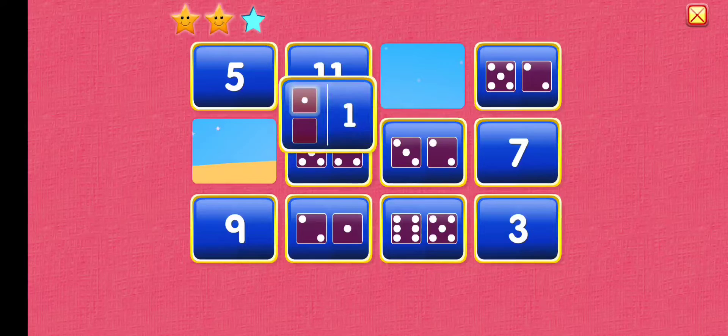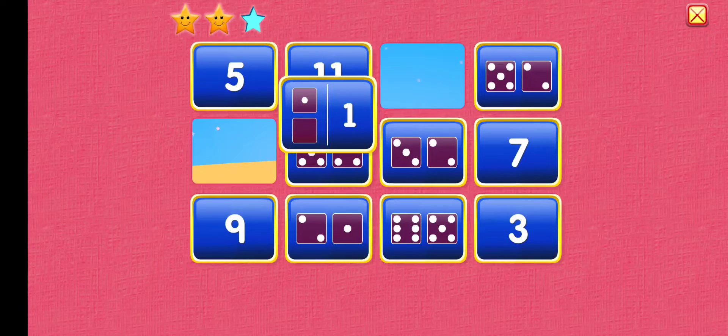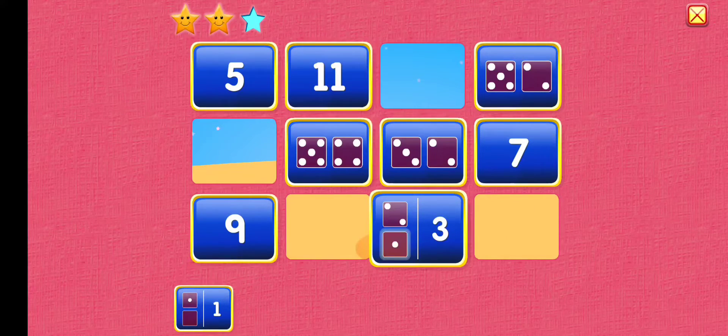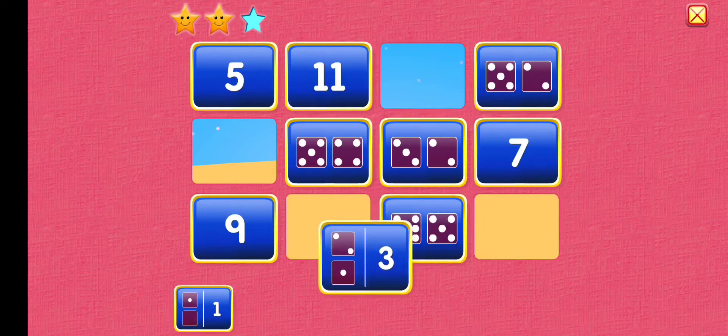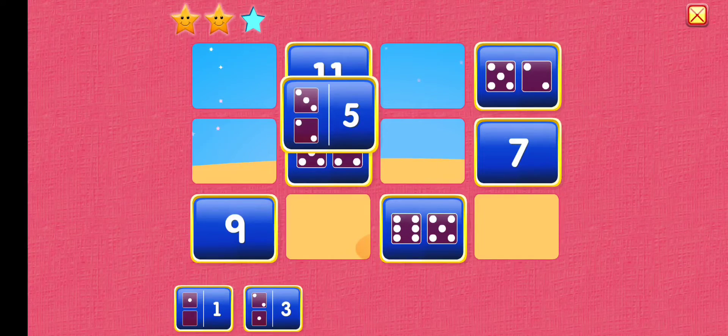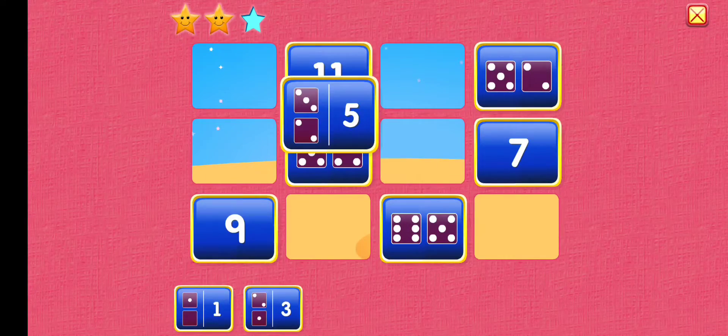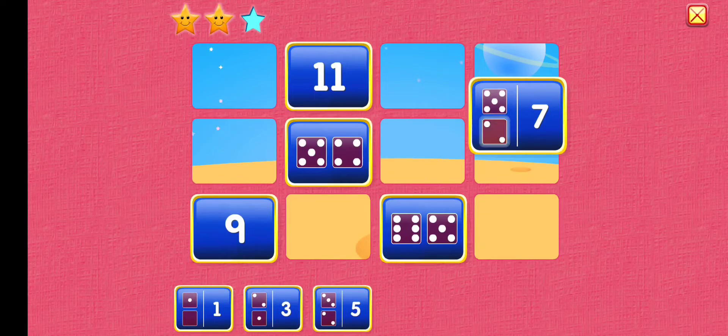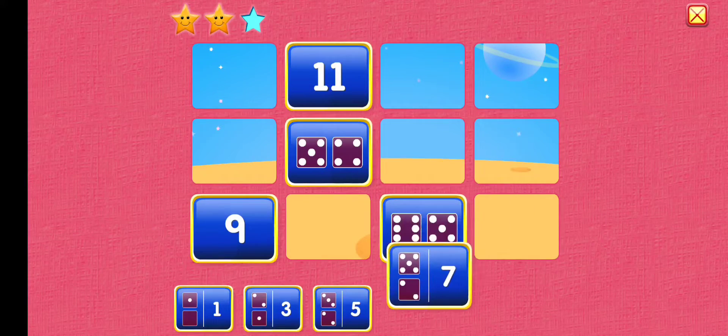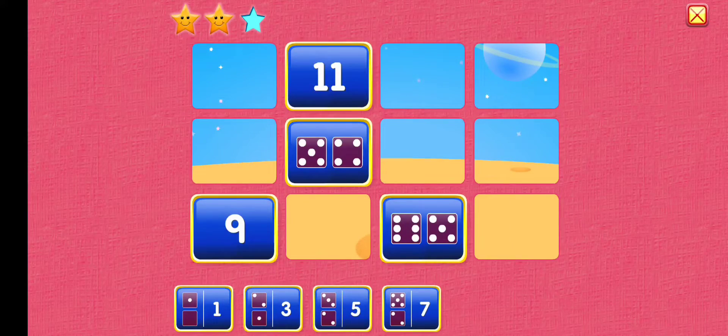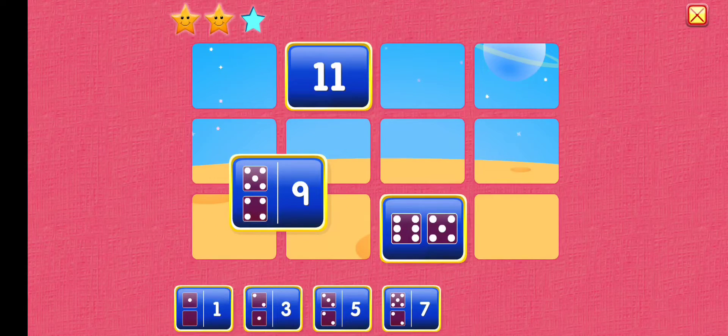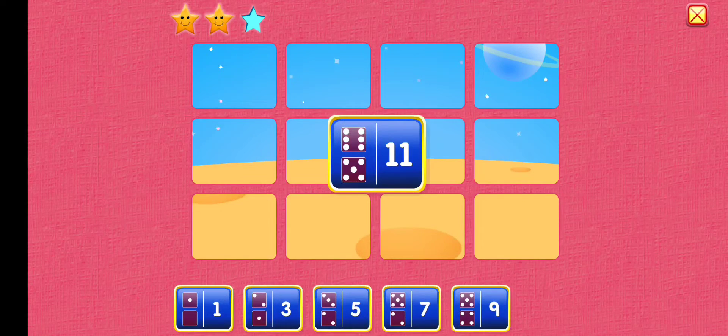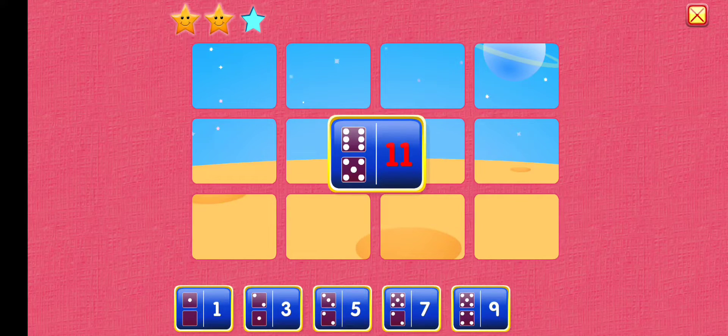1 plus 0 equals 1, 2 plus 1 equals 3, 3 plus 2 equals 5, 5 plus 2 equals 7, 5 plus 4 equals 9, 6 plus 5 equals 10, 6 plus 5 equals 11.